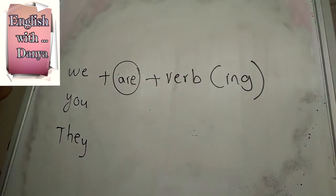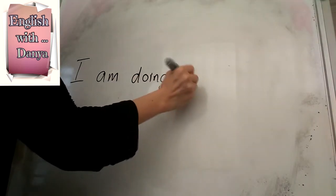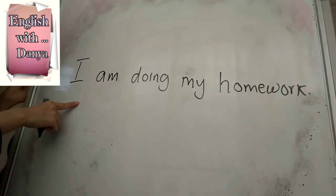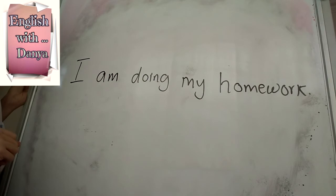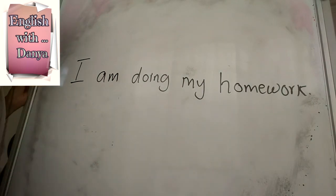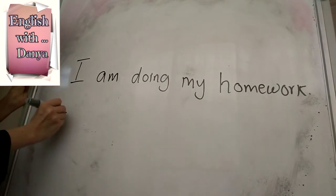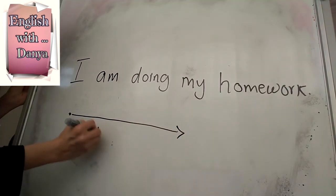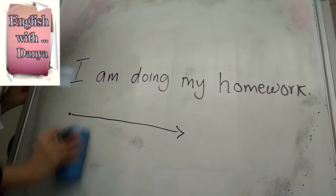These are the main rules for present continuous — something that is going on. Let's look at this sentence: 'I am doing my homework.' That means right now I am doing my homework. The homework might continue for one, two, or even more hours. It shows that I started doing my homework somewhere in the past and I am still working on it.